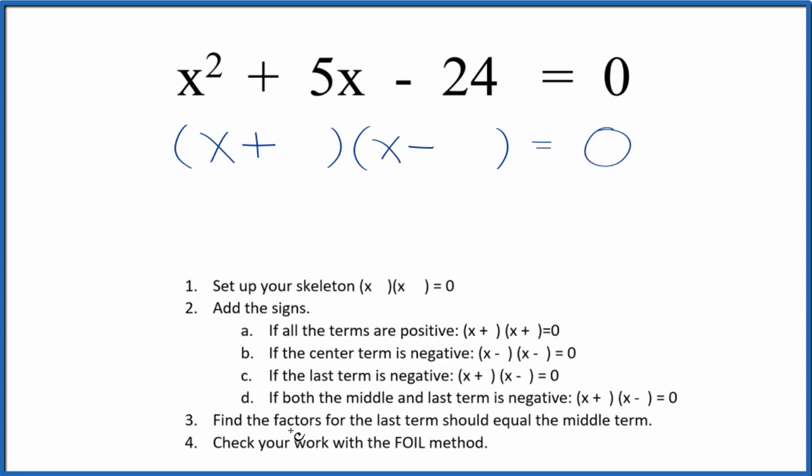Next, we're going to find the factors for the last term. That's the negative 24. And they need to add up to the middle term. That's the 5.